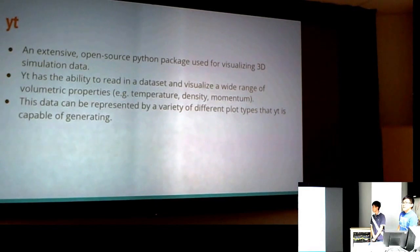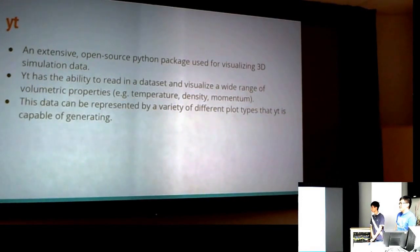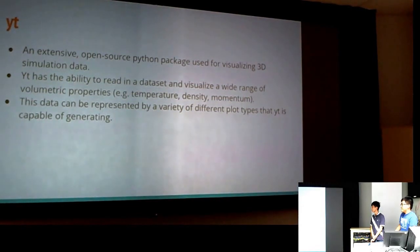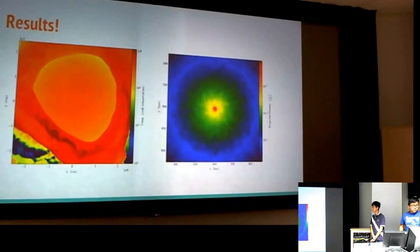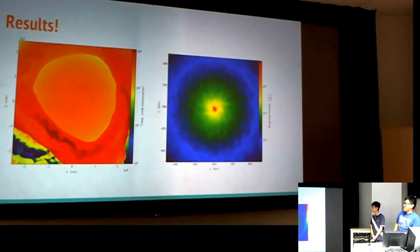So, the general gist of it is that it reads in the dataset that is produced from Proteus, and then what you can do is you can specify what you want from YT, what you want YT to do with it. For example, I want to plot the temperature across this galaxy. I want to see how the density changes with respect to distance from a certain place. And, this is what we get out of it.